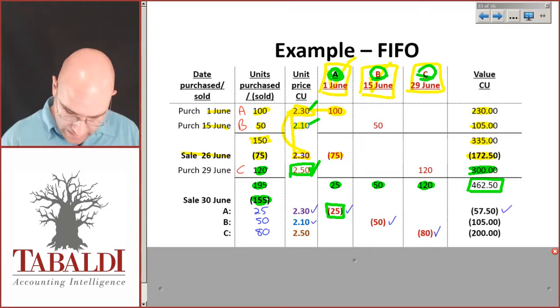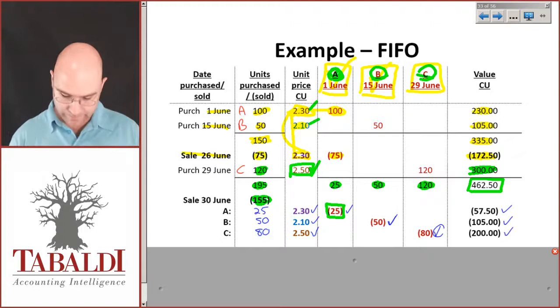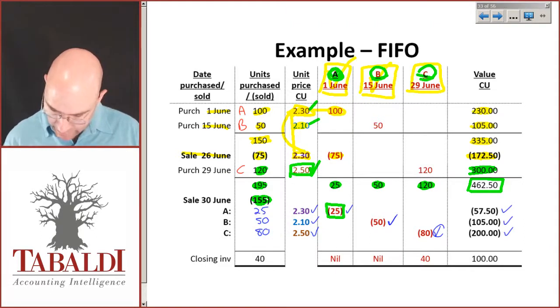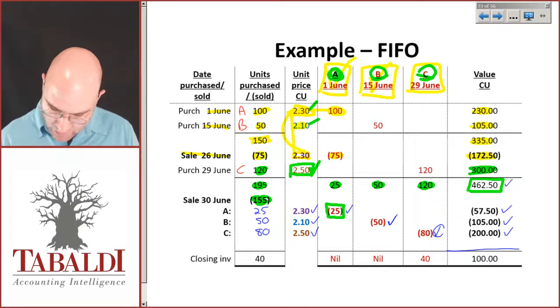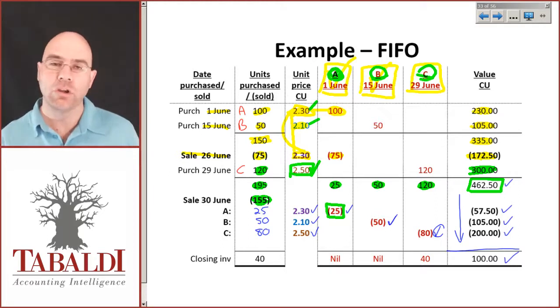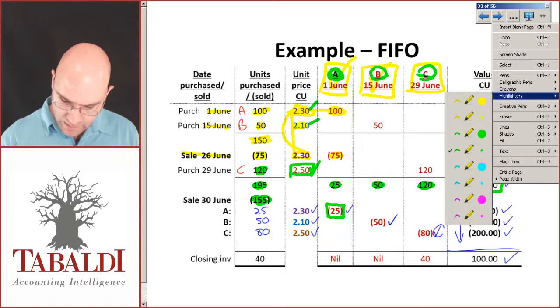And those will be done, 25 times 2.30 gives me 57, 2.10 times 50 gives me 105, 80 times 2.5 gives me 200. I then can go and add these up: 462 minus the 57, the 105, and the 200 gives me 100 closing stock value.